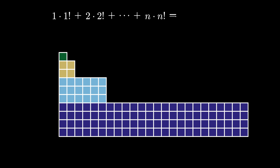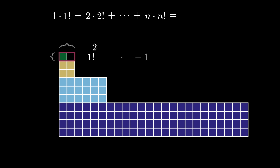Now here's an inductive way to rearrange the squares. Notice that the top square sits inside a 1 factorial by 2 rectangle, so it represents the number 2 times 1 factorial minus 1, which is 2 factorial minus 1.